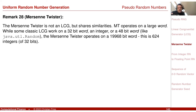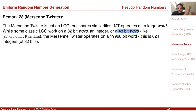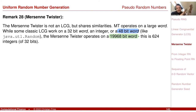The Mersenne Twister is not a linear congruential generator, but shares some similarities. The LCG operates on a single integer — perhaps 32-bit or 48-bit (as in JavaUtilRandom with M = 2^48). The Mersenne Twister operates on an integer with 19,968 bits — actually an array of 624 32-bit integers. In every iteration, this huge array is completely twisted.